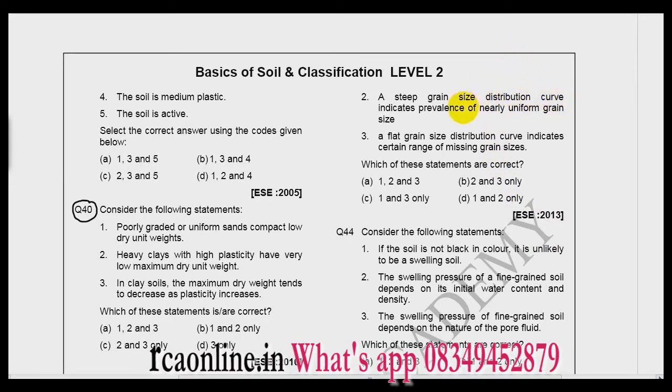Now a steep grain size distribution curve indicates prevalence of nearly uniform grain size. Yes, so if I have a curve like this which has very steep slope, then this is a uniform soil, meaning most of the particles lie between these two sizes only. This is also correct. And the third, a flat grain size distribution curve indicates certain range of missing grain sizes. Yes, these particles are missing. This soil is known as gap graded. So all three statements are right, which is option A is the correct answer. Good question.